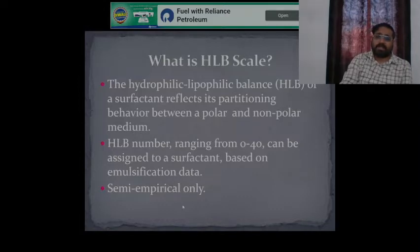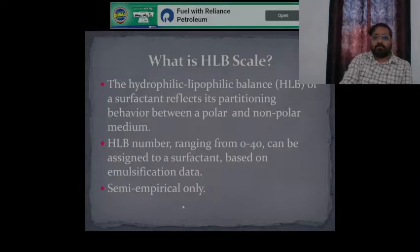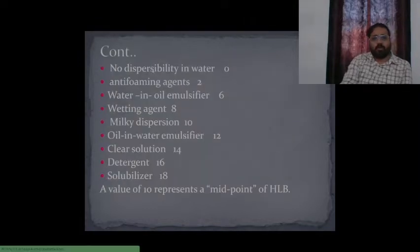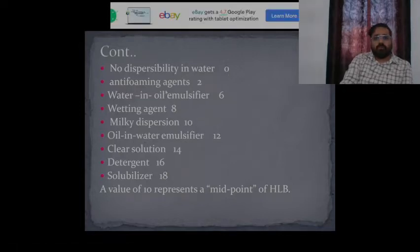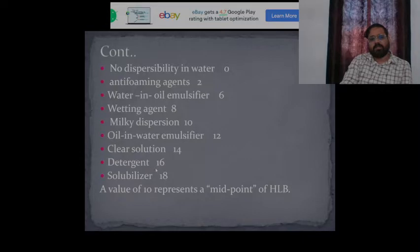The HLB scale (Hydrophilic-Lipophilic Balance) is used to measure hydrophilicity and lipophilicity and determine the behavior in polar or nonpolar medium. The number ranges from 0 to 14, allowing us to assign surfactants based on emulsification data. For example: no dispersibility in water (HLB ≈ 0), anti-foaming agent (2), water-in-oil emulsifier (6), wetting agent (8), milky dispersal (10), oil-in-water emulsifier (12), clear solution (14), detergent (16), solubilizer (18).